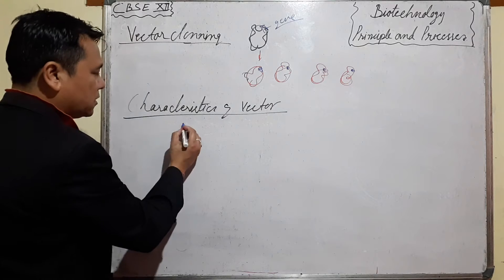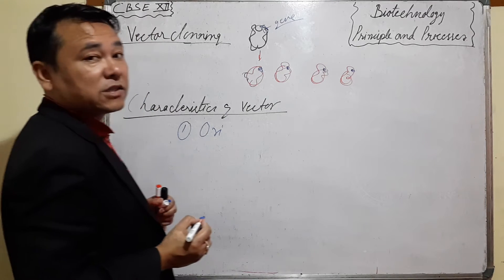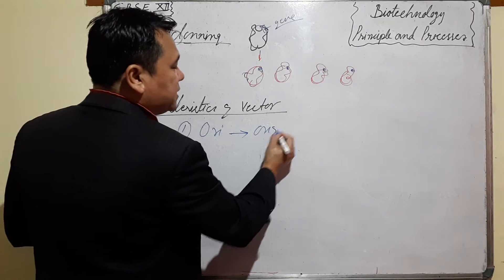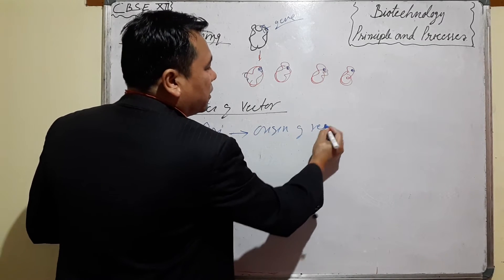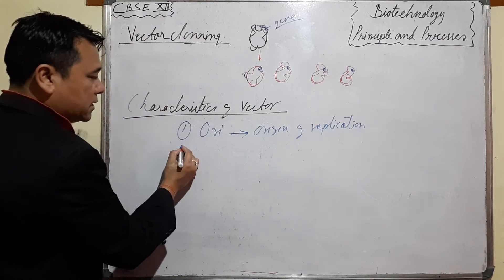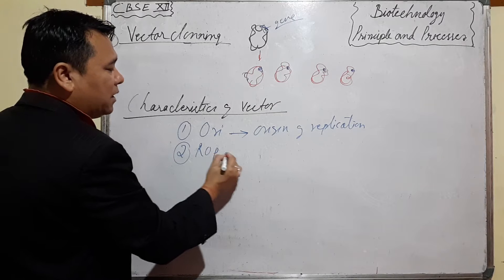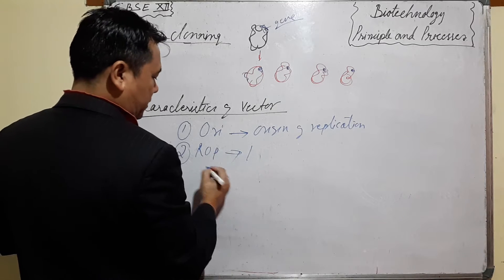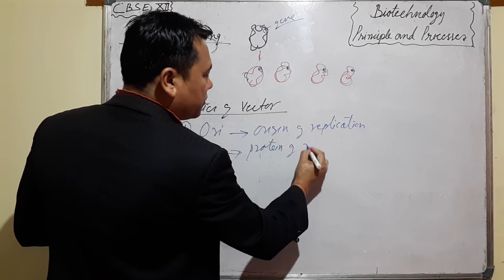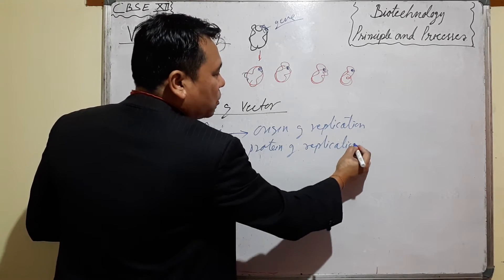Number one is origin of replication. The first characteristic is origin of replication — the vector must have an origin of replication.